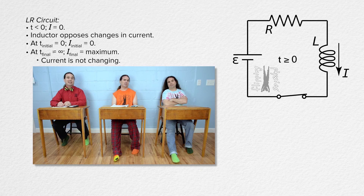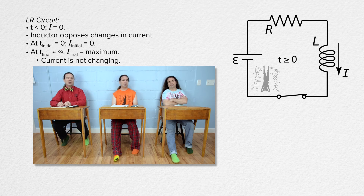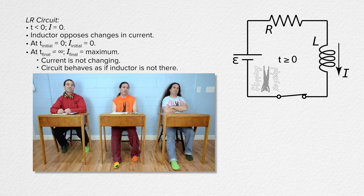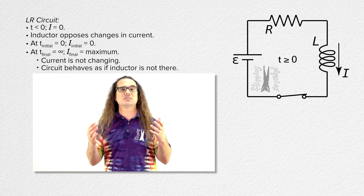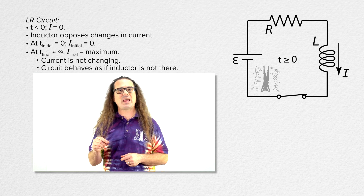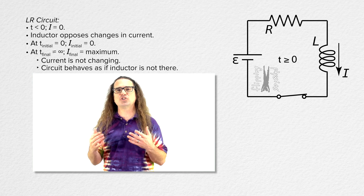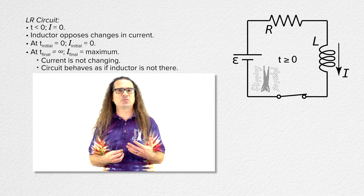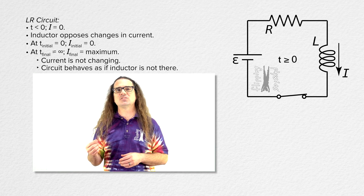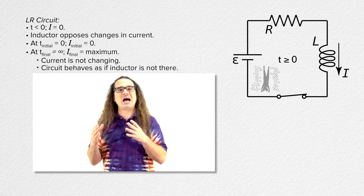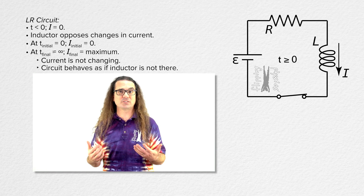So after a long time, the current in the circuit is not changing, so the inductor has no change in current to oppose. It's basically like the inductor is not there after a long time. The current at time equals zero is zero, and the current after a long time is at its maximum value — a steady state current. The inductor has zero resistance to the current because the inductor is made of a coiled up ideal wire with zero resistance.